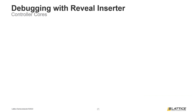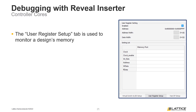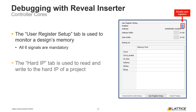The next controller tabs are the User Register Setup and Hard IP Setup tabs. The User Register Setup tab can be used to monitor a design's memory. It contains six signals, all of which are mandatory. To add signals, drag the signal name from the design tree to the correct port. The maximum data width for signals in this tab is 32 bits. As signals are added, the address and data width fields will automatically update. Users can disable this feature using the checkbox at the top if they do not want to configure user register access.